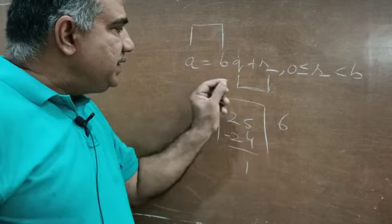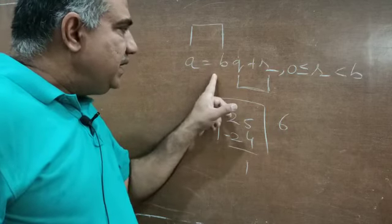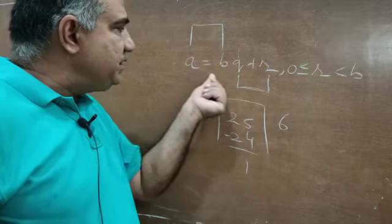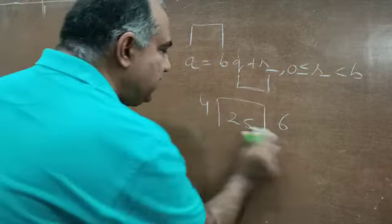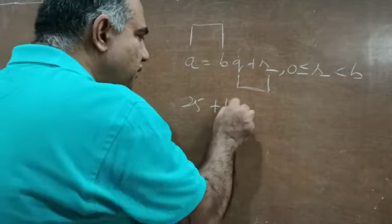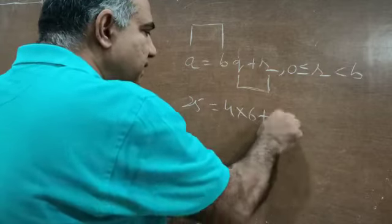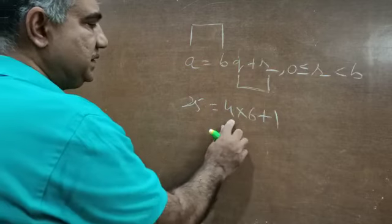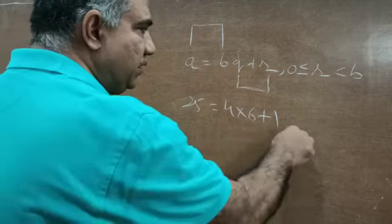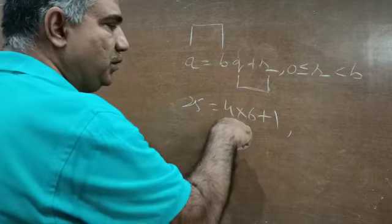Once more: Euclid's Division Lemma states that given two positive integers a and b, there exist two unique integers q and r satisfying a is equal to bq plus r. For our example, 25 is equal to 4 into 6 plus 1, which gives 24 plus 1 equals 25. This satisfies the relation, and the condition is also satisfied because remainder 1 is less than divisor 4.